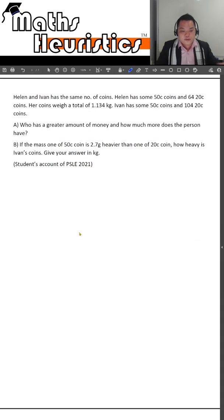For this question, Helen and Ivan had the same number of coins. Helen had some 50 cent coins and 64 twenty cent coins. Her coins weigh a total of 1.134 kg. Ivan had some 50 cent coins and 104 twenty cent coins.